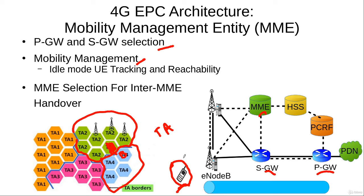In the connected state — for example, during a call — the location of the UE is known to the network at the cell level. If the UE moves from one cell to another, it needs to update its cell location with the network, and more precisely it updates its cell location with the MME.